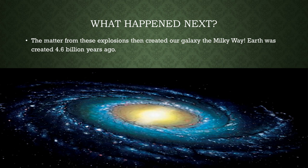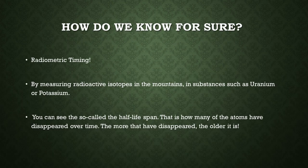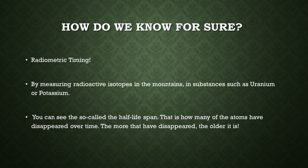The Earth was created about 4.6 billion years ago. How do we know for sure? Well, scientists use a method known as radiometric dating. They measure the radioactive isotopes in mountains in substances such as uranium or potassium. Then they use something known as the half-life span — that is, how many of the atoms have disappeared in these materials over time. The more that have disappeared, the older the matter is.